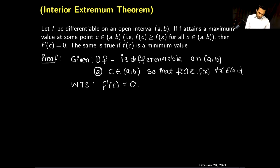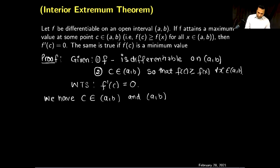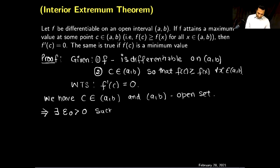Now I will start from what we have. c belongs to the interval (a, b), and we know the open interval is an open set. Since (a, b) is an open set and c belongs to it, I can find an epsilon₀ positive such that I can create an open ball around c — that is, (c − ε₀, c + ε₀) — which will be completely contained in the interval (a, b).